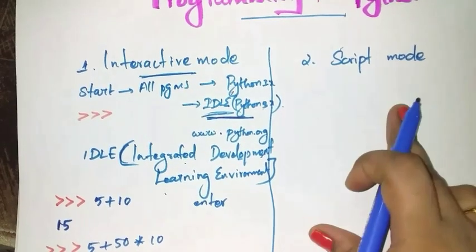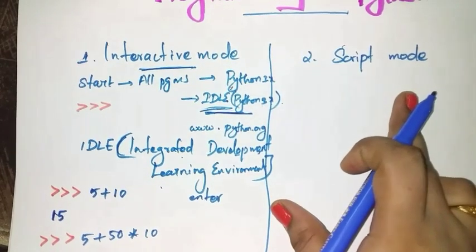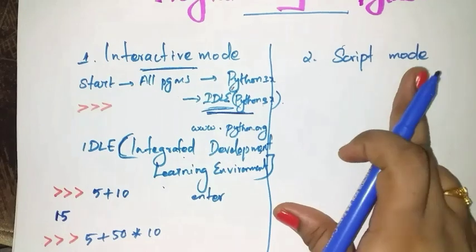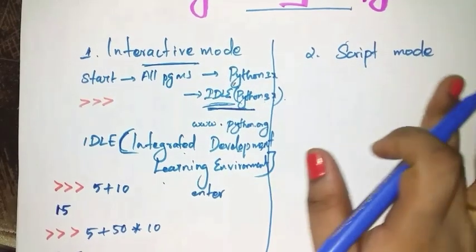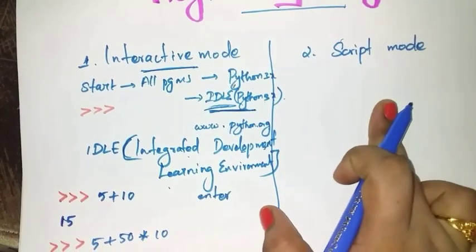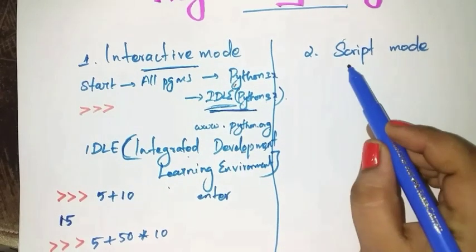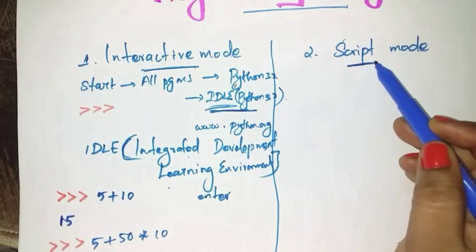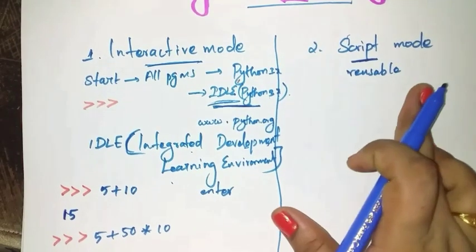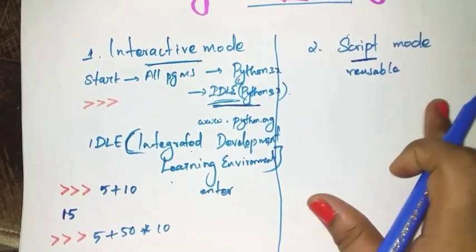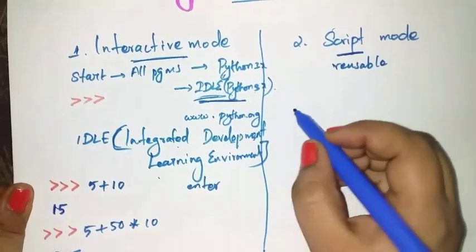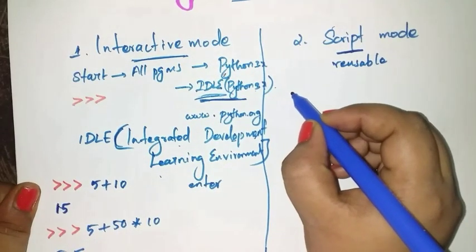In script mode, you type your code and save it. If there is any mistake, you can edit it easily because you are saving your file, and you can also reuse that code again and again. Basically, a script is a text file containing Python statements. Scripts are executable and reusable. Once a script is created, it can be executed again and again without retyping.